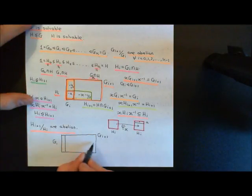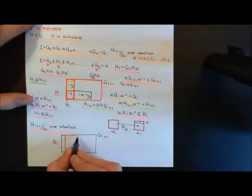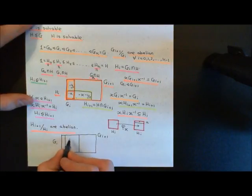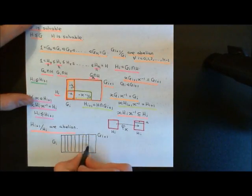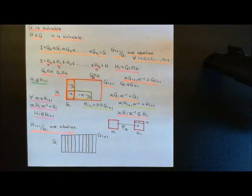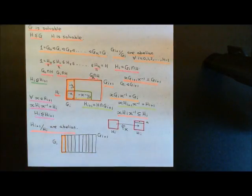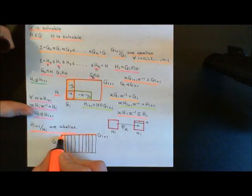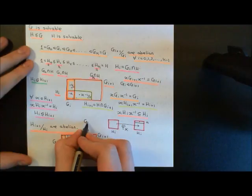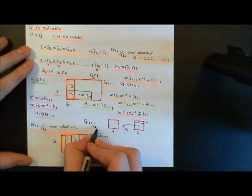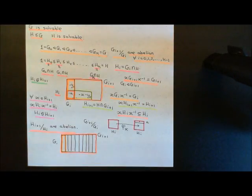G_i is a normal subgroup of G_{i+1}, so we can use G_i to quotient G_{i+1} into a coset partition — the left and right coset partitions will be identical. So here is the coset partition of G_{i+1} into the cosets of G_i. We'll have G_i outlined in orange and G_{i+1} outlined in red. These cosets become the elements of the quotient group, and the composition law works by taking representatives from two cosets, composing them in the initial group, and taking the coset containing the answer. We know that quotient group is going to be abelian.